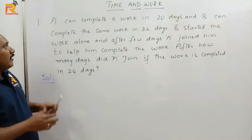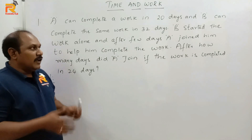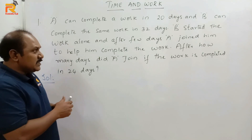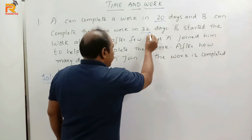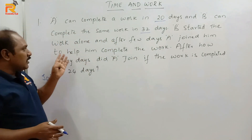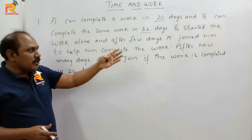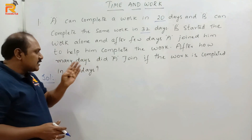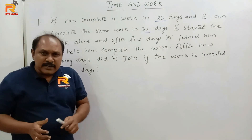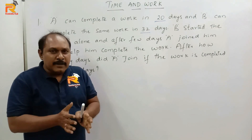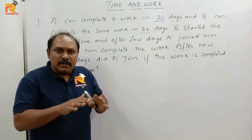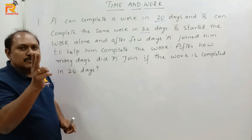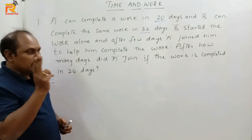Now let us solve the first question. A can complete a work in 20 days and B can complete the same work in 32 days. This is the initial information about A and B separately. B started the work alone and after few days A joined him to help complete the work. After how many days did A join if the work is completed in 24 days? We can solve this particular problem in just 2 steps.